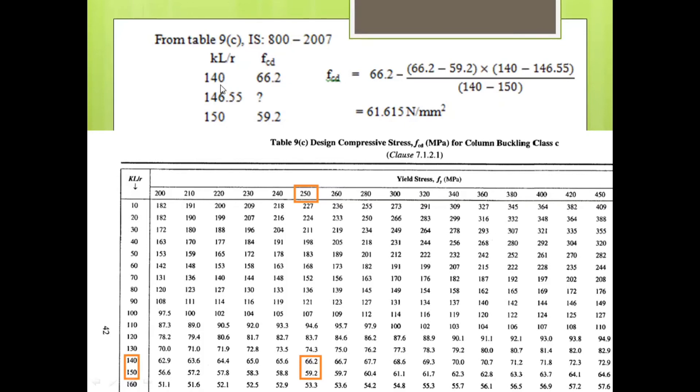Now, for 140 slenderness ratio, design compressive stress value is 66.2. I have noted down here. For 150, it is 59.2. That also I have noted down here. However, for our selected section, slenderness ratio is 146.55. So how much will be FCD, design compressive stress for this particular slenderness ratio? So we will follow the interpolation. So for 140, it is 66.2. For 150, it is 59.2. So as my slenderness ratio goes on increasing, FCD goes on reducing. So from 66.2, the next value I shall subtract since it is minus. Now, how to do the interpolation: 66.2 minus 59.2, this is our first bracket multiplied by 140 minus 146.55 totally divided by 140 minus 150. So whatever is this ratio, you subtract it from 66.2, you will get design compressive stress for 146.55 slenderness ratio that comes to be 61.615 Newton per mm square.